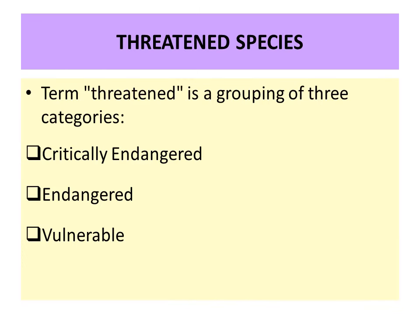The term 'threatened species' is a general term given to three important categories: critically endangered, endangered, and vulnerable. All species falling under these three categories are collectively known as threatened species.